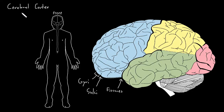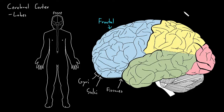We divide the cerebral cortex into lobes, and we name them the same as the bones of the skull right over those areas. So the big lobe in the front, under the frontal bone, is called the frontal lobe. The one behind it, next to the parietal bone of the skull, is called the parietal lobe.